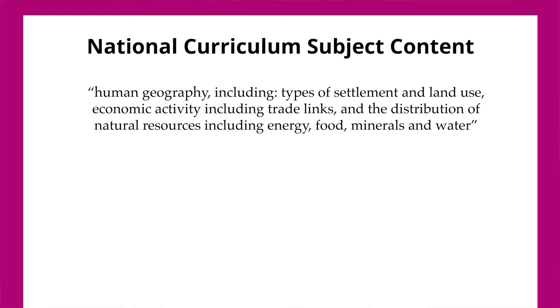The national curriculum states that pupils should be taught about human geography, including types of settlement and land use, economic activity including trade links, and the distribution of natural resources including energy, food, minerals and water. The national curriculum also states that pupils should make comparisons between the UK and cities in Europe and North and South America.